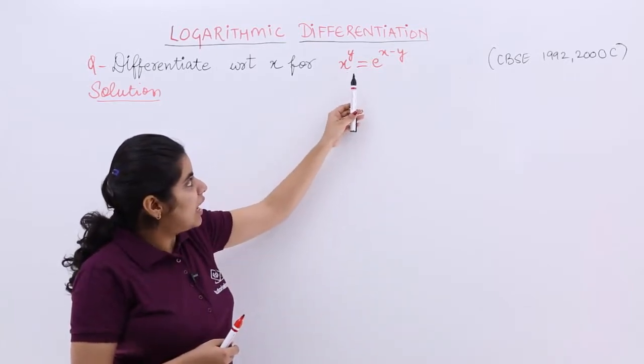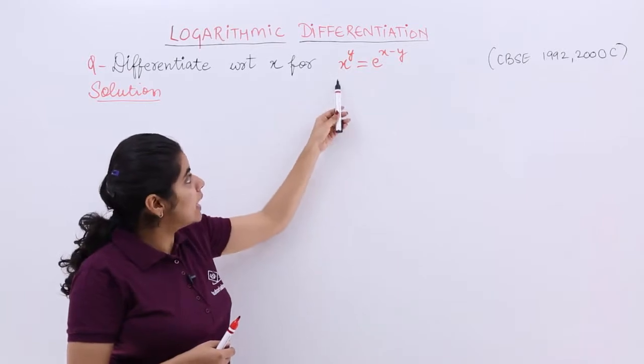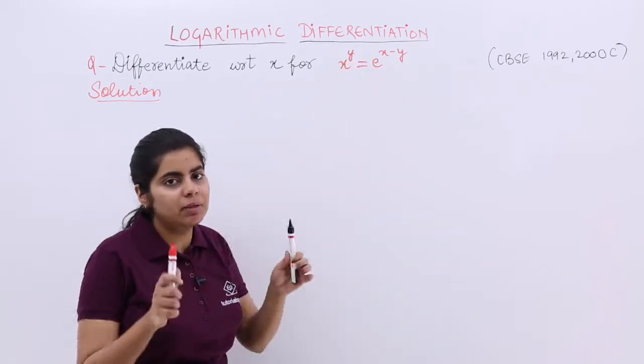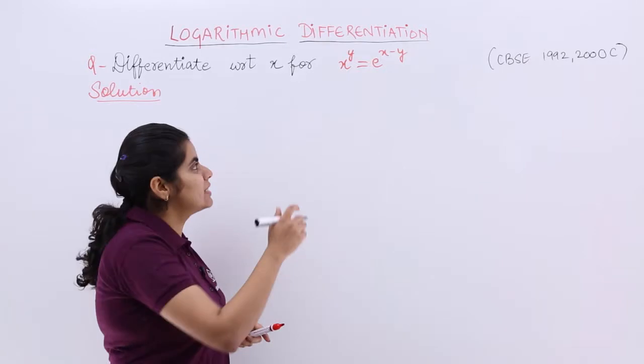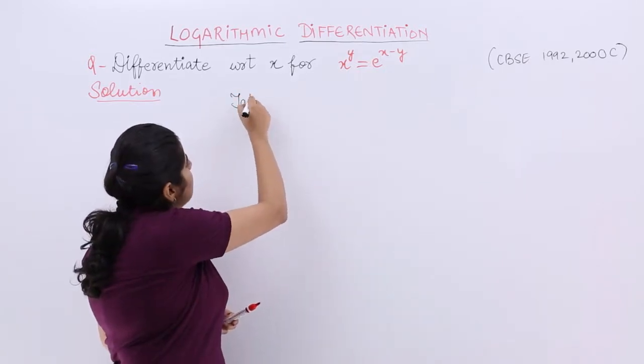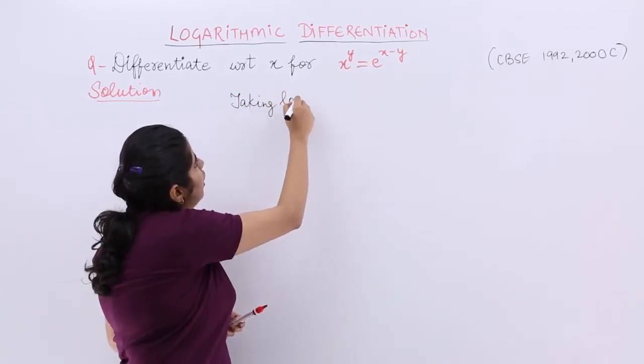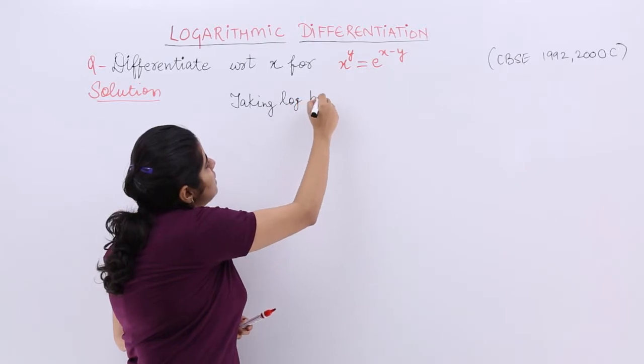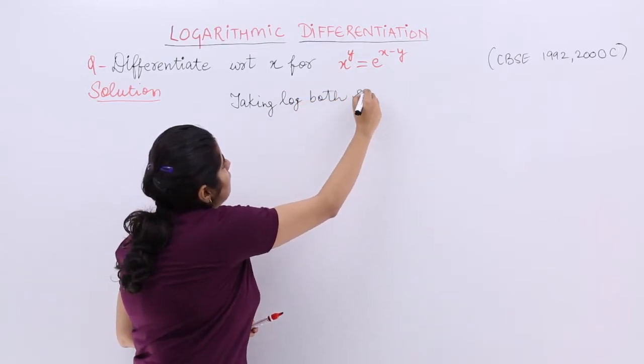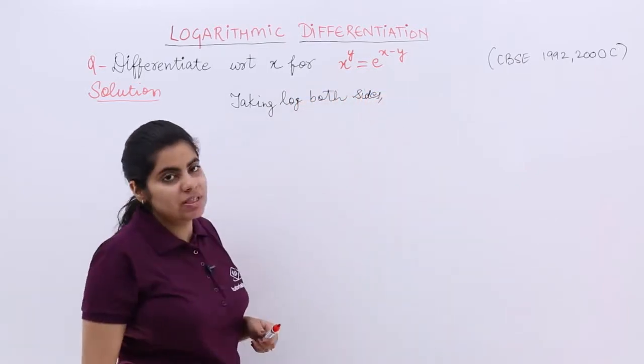Earlier it was y is equal to something. This time it is x raised to the power y. Variable raised to the power variable means logarithmic differentiation. So let's take log both sides. Taking log both sides.